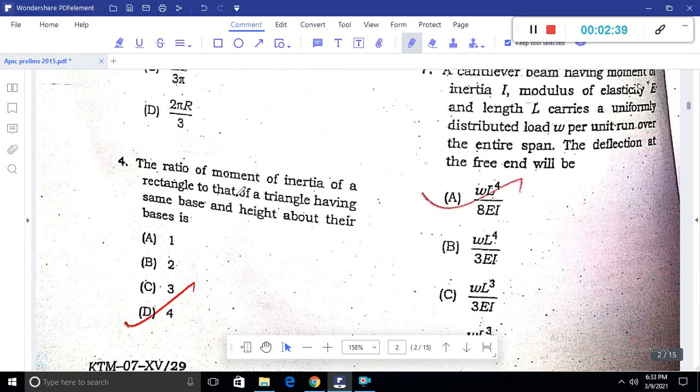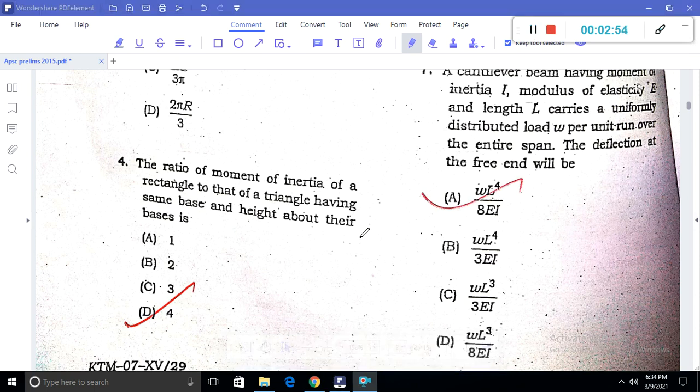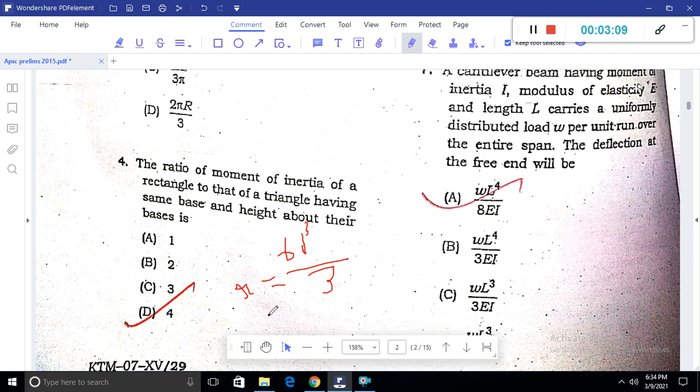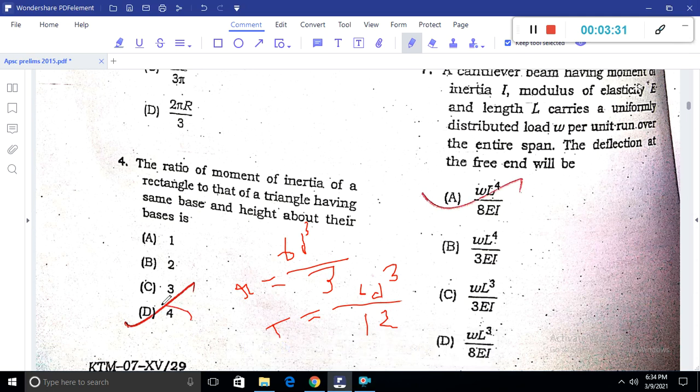Question 4: The ratio of moment of inertia of a rectangle to a triangle with the same base and height. For the rectangle, the moment of inertia is bh³/12. For the triangle, it's bh³/36. So the ratio is 3:1, giving us the answer as 4.